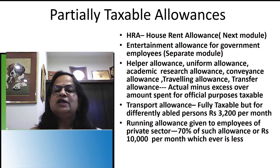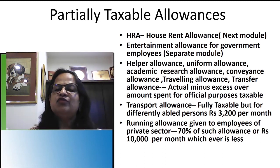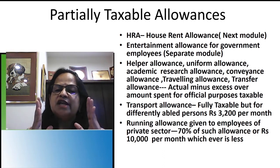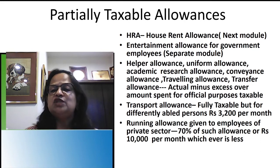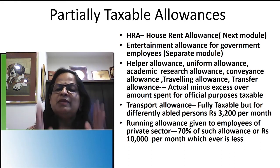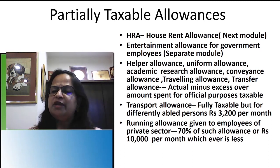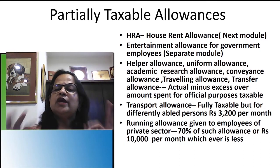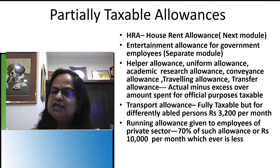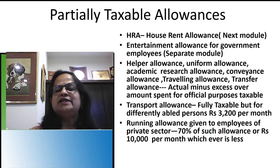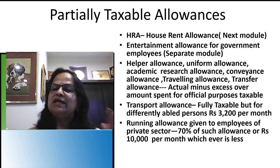Transport allowance is fully taxable for ordinary employees — this change was made from assessment year 2019-20. However, for differently abled persons, Rs. 3,200 per month is exempted. This can be expected as a two-mark exam question. You should remember that for everyone else transport allowance is fully taxable, but differently abled persons get the Rs. 3,200 per month exemption because of the difficulty they face in traveling.